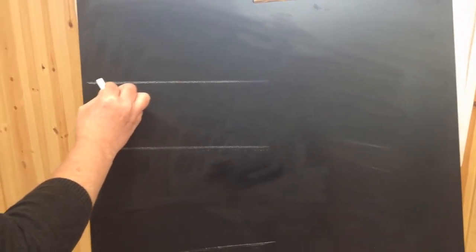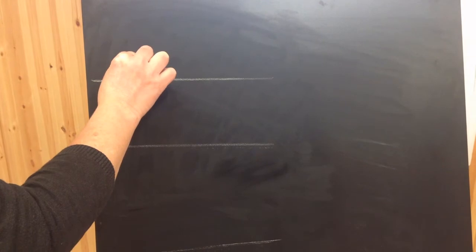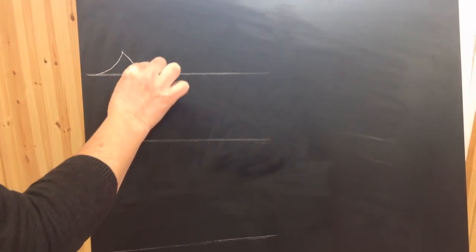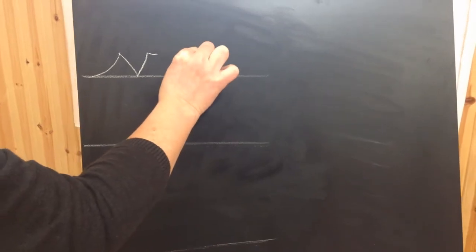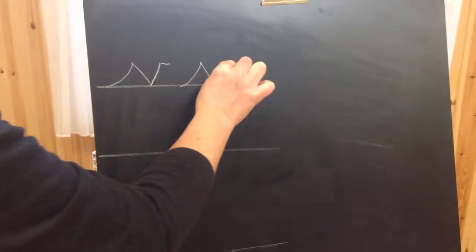V and W are those spiky letters, so make sure when you've done your lead-in that you come down diagonally to a point, back up and a flick. So you've got your lead-in, diagonally down, back up and a flick.